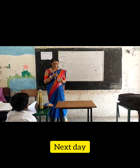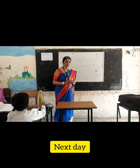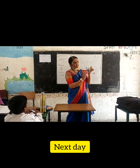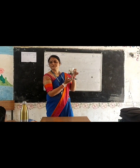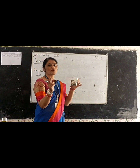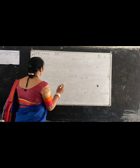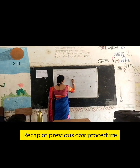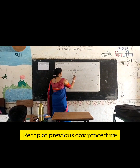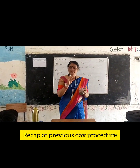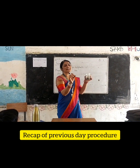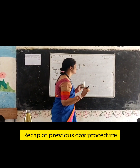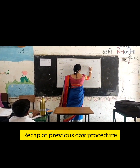So children, last class in the time period we took the beaker and we added a solution. What was the name of that solution? Copper sulfate. And what did we add to it? Iron. So copper sulfate plus iron.